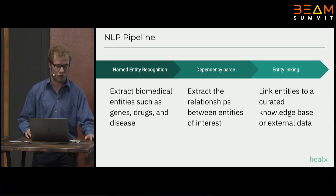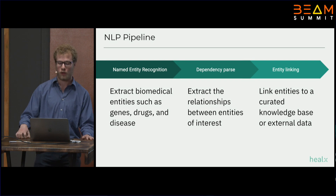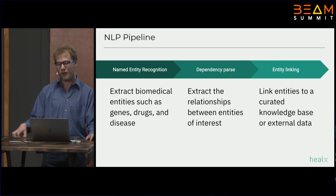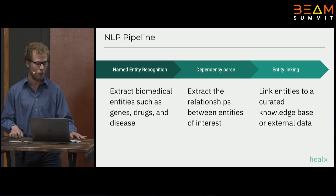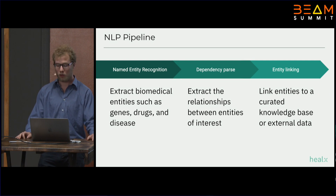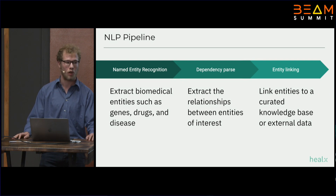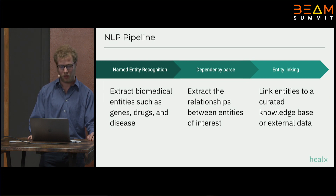In our NLP pipeline, we initially look for biomedical entities through named entity recognition. The next step is we use a dependency parse to identify relationships between them, and this way we get useful candidate triplets. The last step is we try and link entities to existing curated knowledge bases or external data repositories, such as gene databases, to find more information about specific entity types.